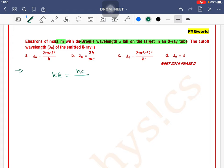In terms of cutoff wavelength, it can be written as hc by lambda naught. And there is another formula for kinetic energy which can be written as p squared divided by 2m in terms of momentum.